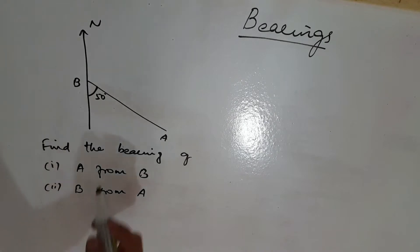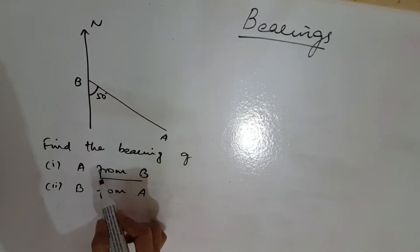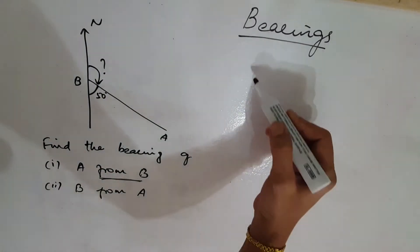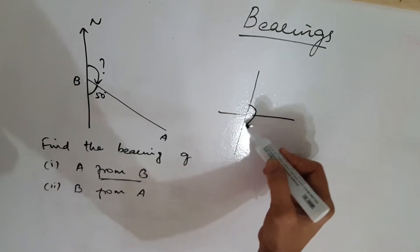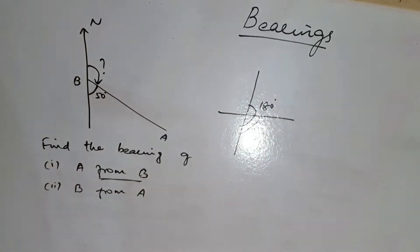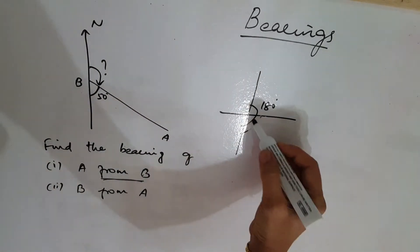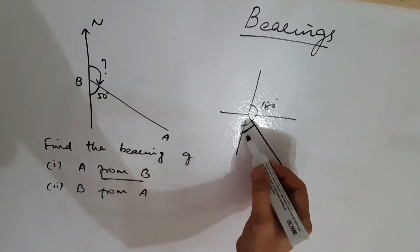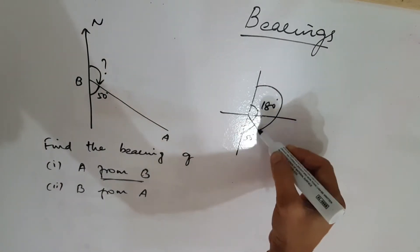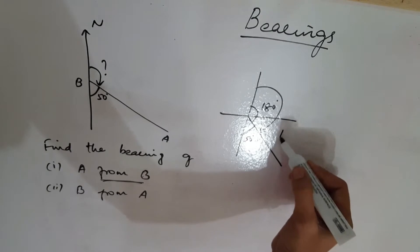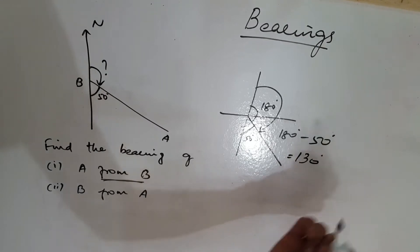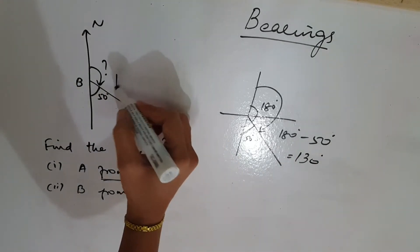In this question, we will see: find the bearing of A from B. From B, we need to calculate. Already we know this is 180 degrees. It is given this is 50 degrees. So we need to calculate this portion: 180 minus 50 degrees is equal to 130 degrees. So this value is 130 degrees.